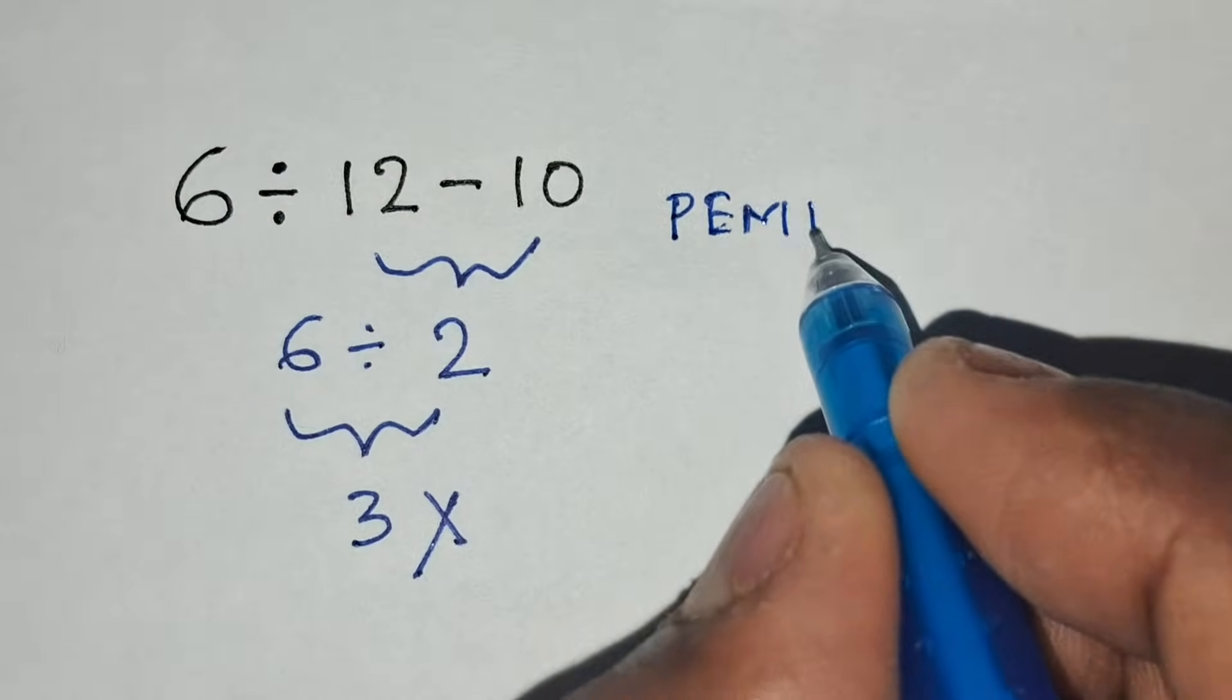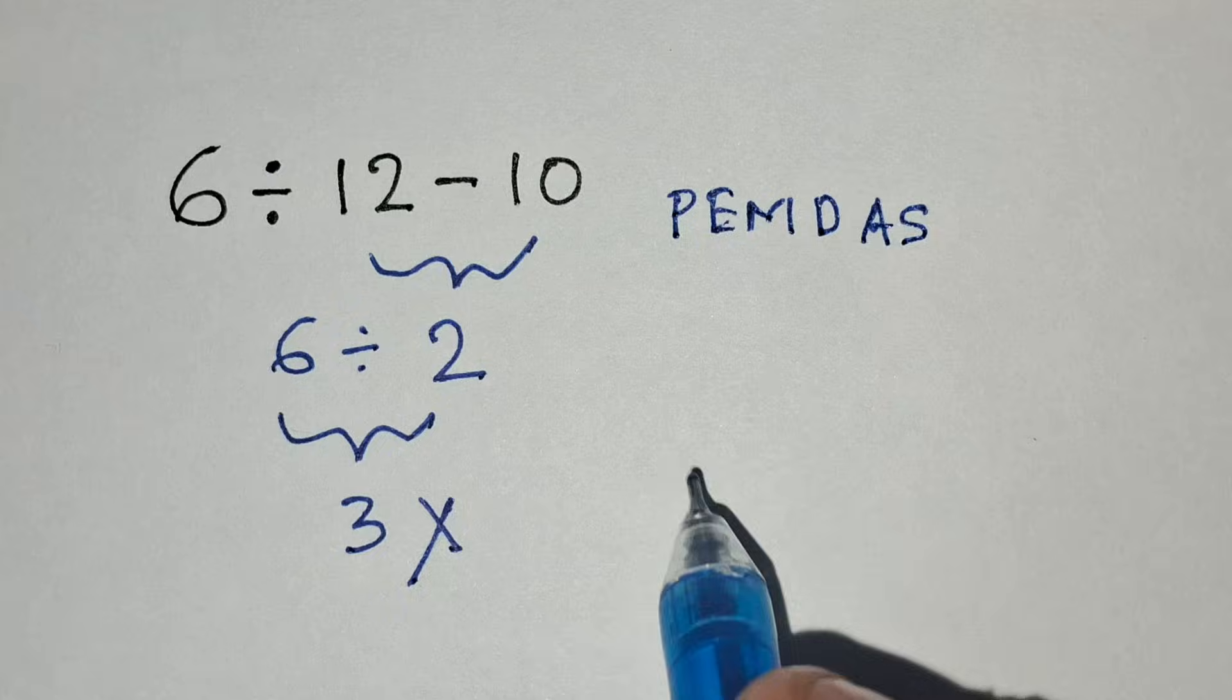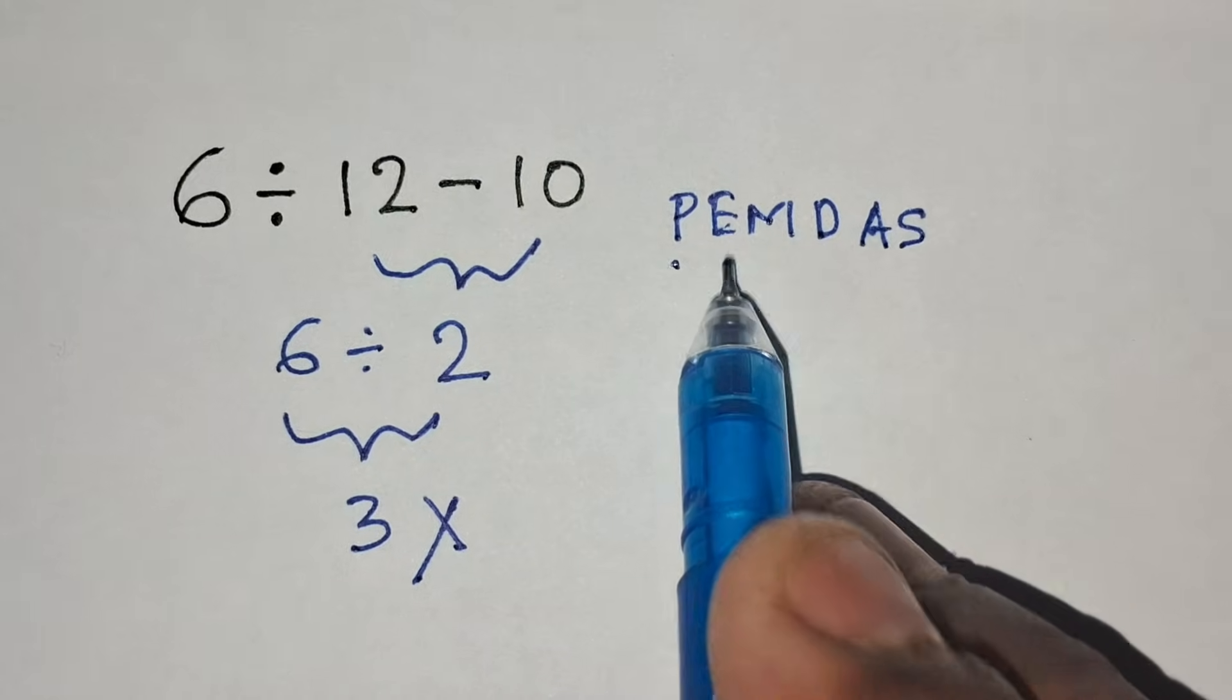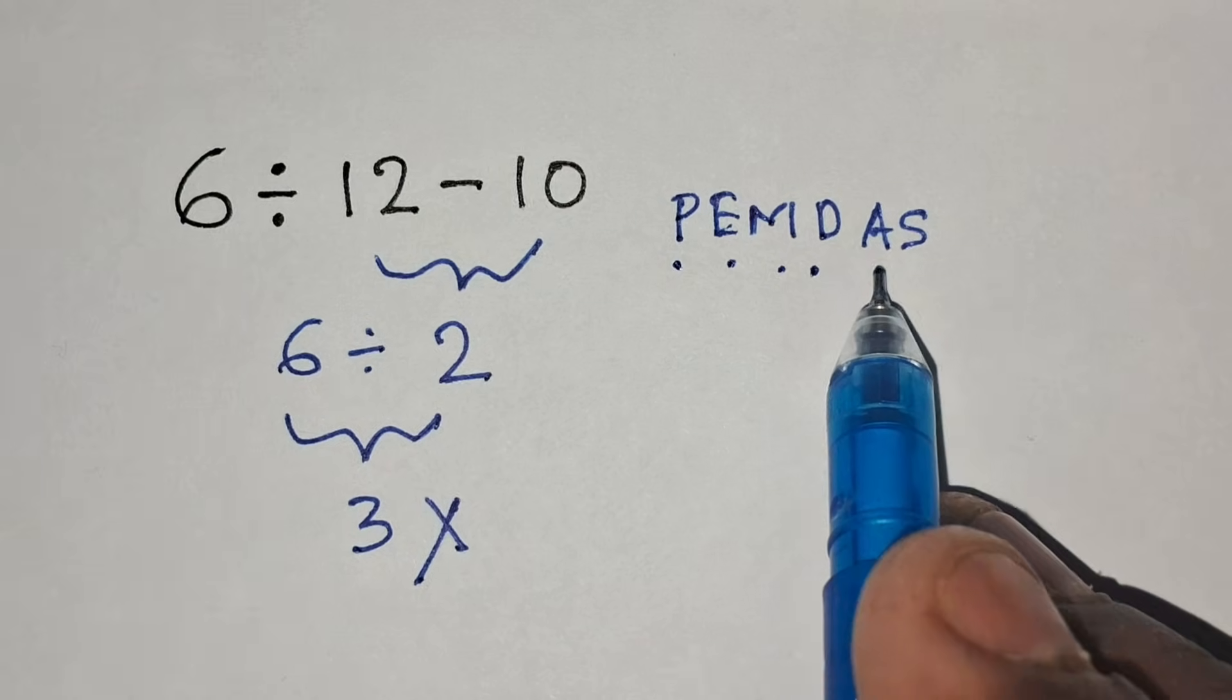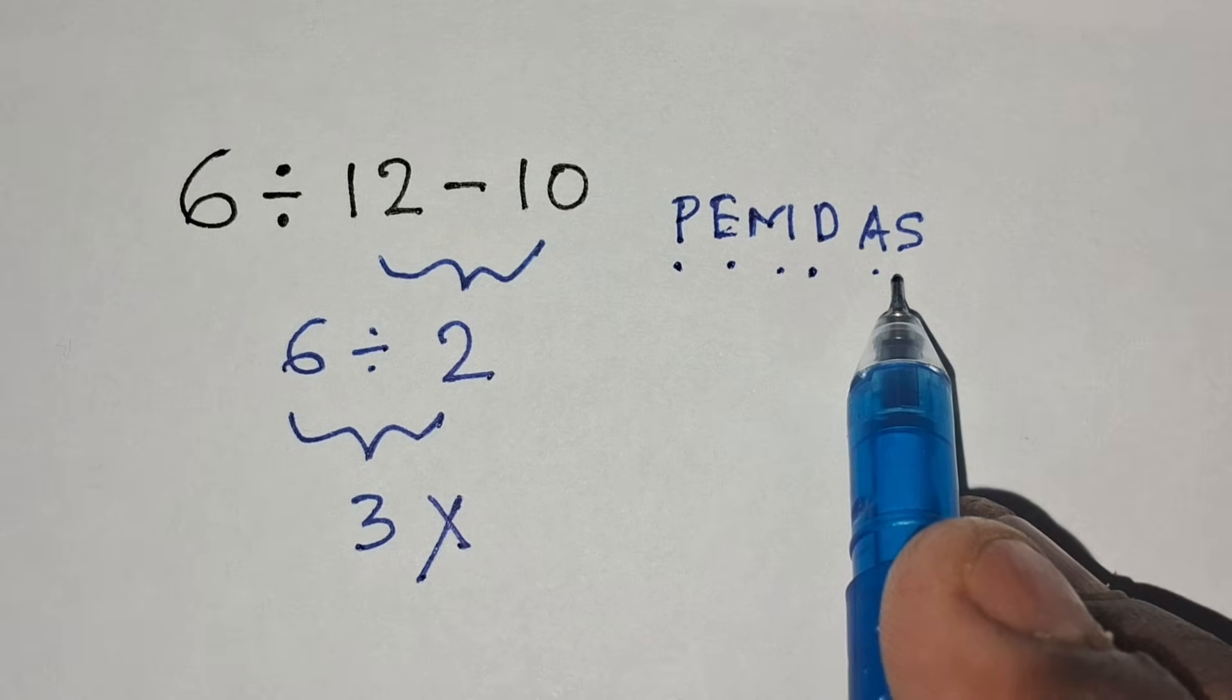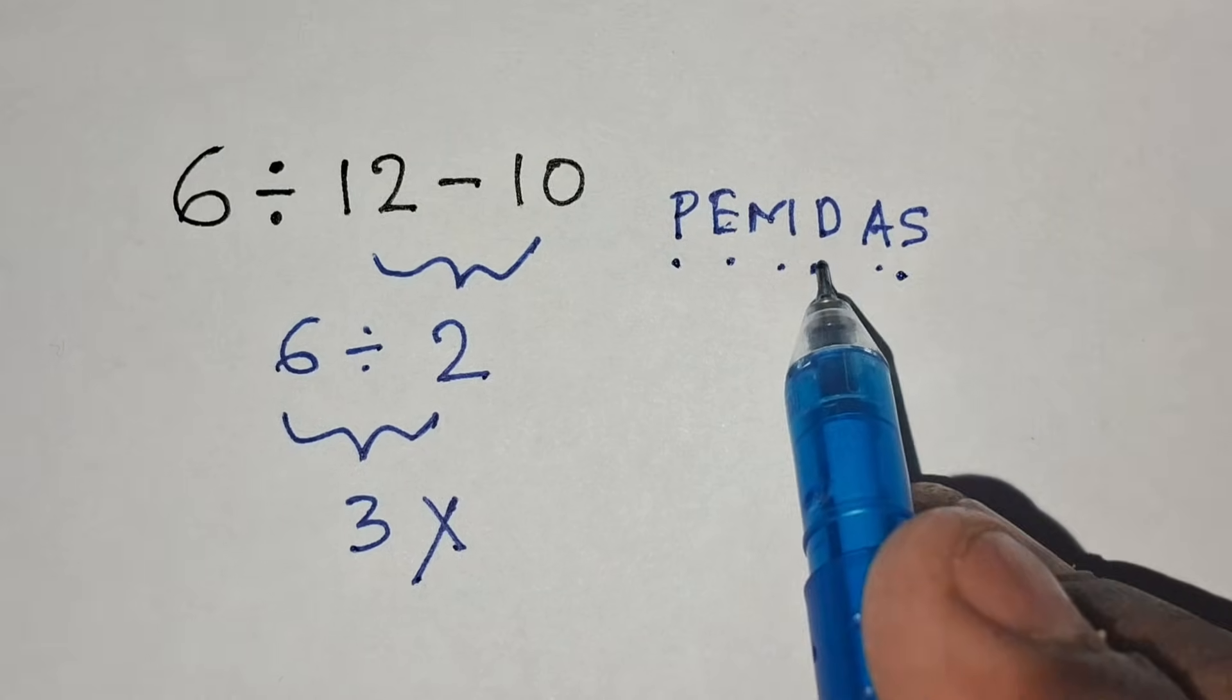P stands for parentheses, E for exponents, M and D for multiplication and division, and A and S for addition and subtraction, where division has greater priority than subtraction.